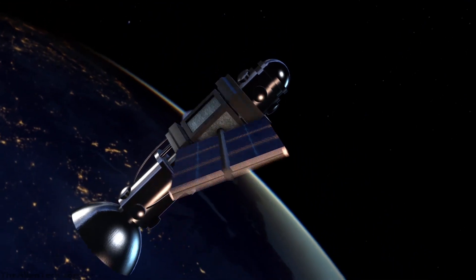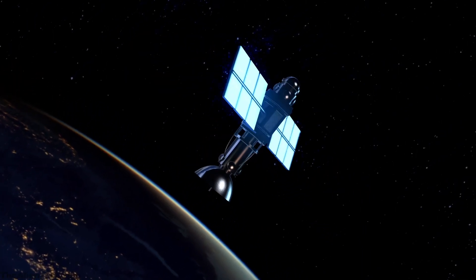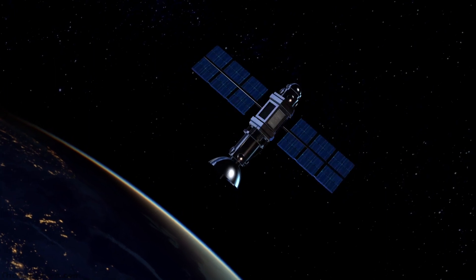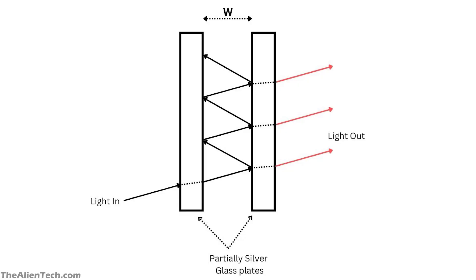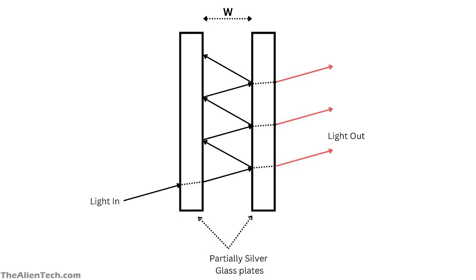Etalons are also used as precise wavelength references in telecommunication applications, and are mostly used to compare wavelengths and to study atomic spectra. There are a few parameters regarding the etalon which you need to understand to understand a solar telescope, and these parameters are also mentioned in the specifications of many solar telescopes. The first one is the bandpass — it is the size of the gap between the reflective surfaces and the reflectivity of the mirror coatings in the etalon. If the mirrors in the etalon have higher reflectivity, then the bandpass will be narrower.